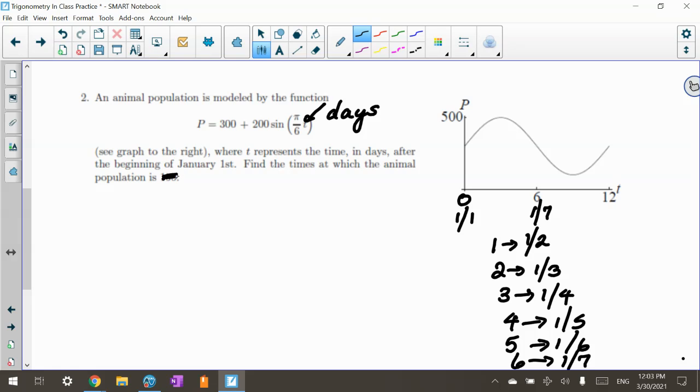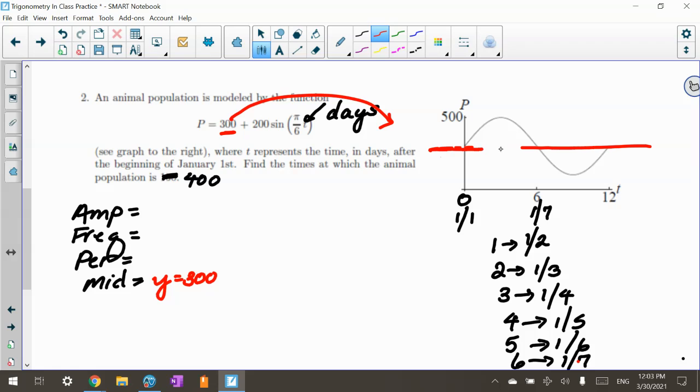Find the times in which the animal population is going to be 400. So I'm switching that up to 400. So the first thing is I want to kind of write down amplitude, frequency, period, and midline. And when you have the equation like this, you can just kind of fill them in. The only weird thing about the equation is I stuck the midline up front. So if you want to, you can think of it as stuck here in the back. So I got y equals 300. And if you look at it, 500, this is 500 and this is 0. So y equals 300. It looks like it's about right here. So that looks like my midline. And it does look like a sine curve.